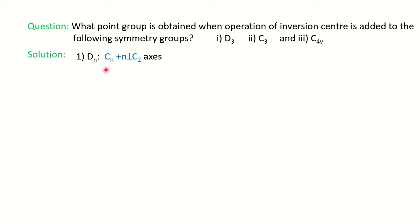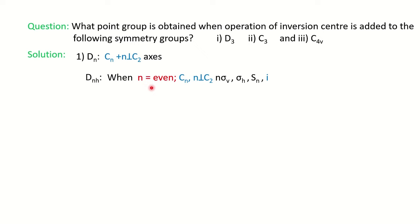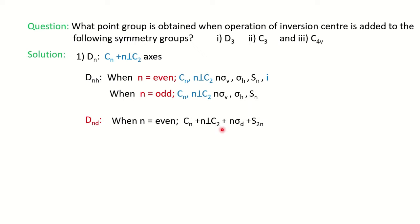Since we have D3 here, we will look at Dn groups. Dn will have Cn and n perpendicular C2 axes. Whenever you have n perpendicular C2, it is classified into Dn. For Dnh, the molecule should have sigma h. There is a further division: if n is even, you should also have sigma v, Sn, and inversion symmetry elements; if n is odd, the inversion will be absent. For Dnd, if n is even you have Cn, n perpendicular C2, n sigma d (dihedral planes), plus S2n; when n is odd, inversion symmetry is present.